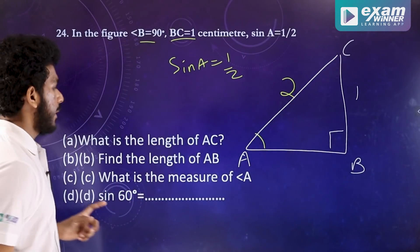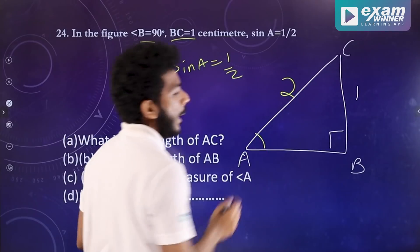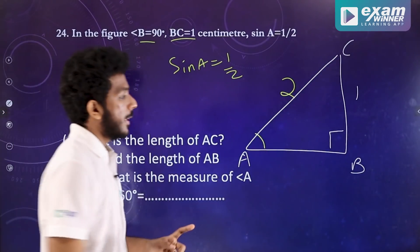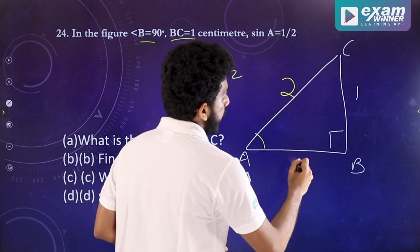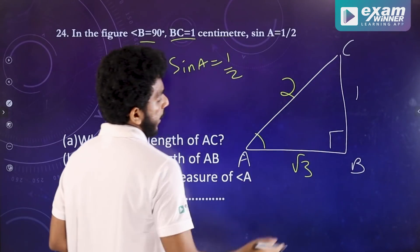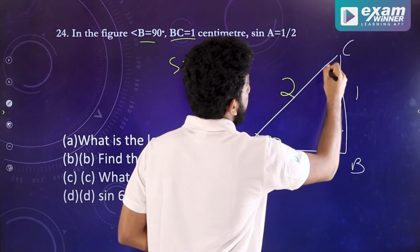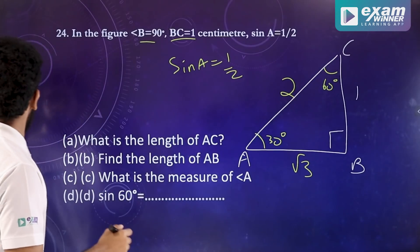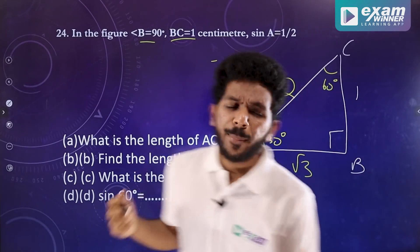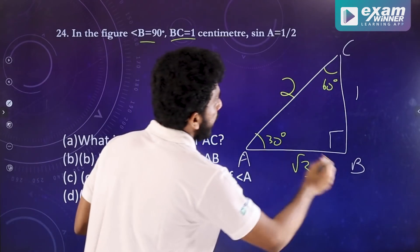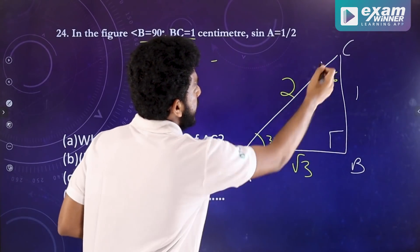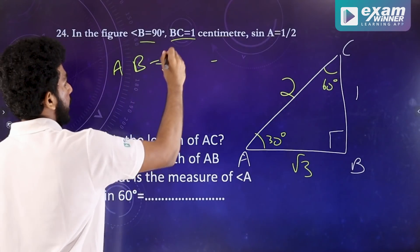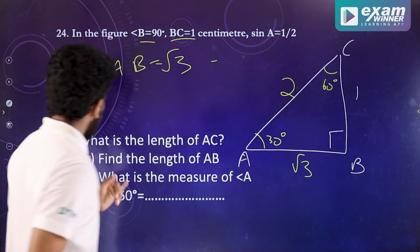The first answer: what is the length of AC? AC is 2. Using the standard ratio, if one side is 1 and hypotenuse is 2, then the other side is root 3, angle A is 30 degrees and angle B is 60 degrees. What is the length of AB? AB is root 3, using the ratio 1 to root 3 to 2.